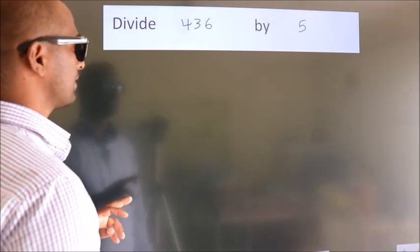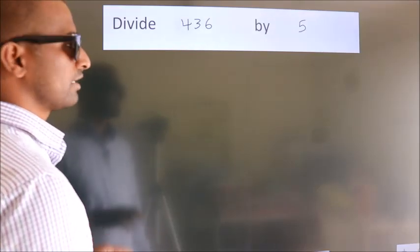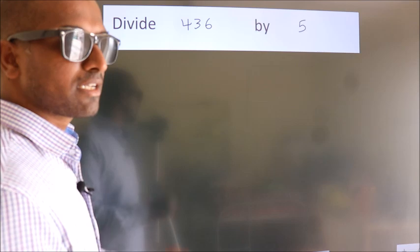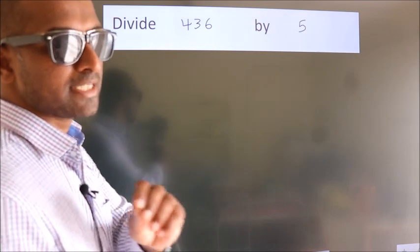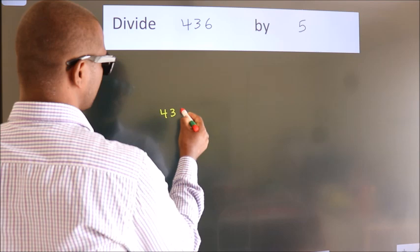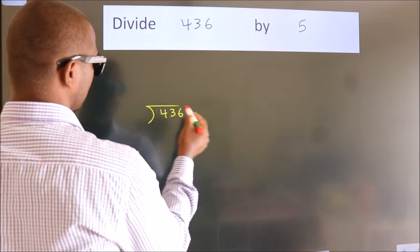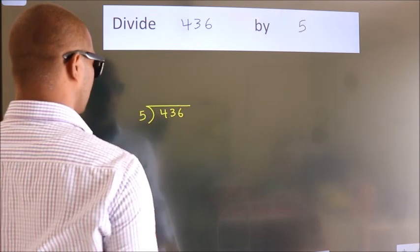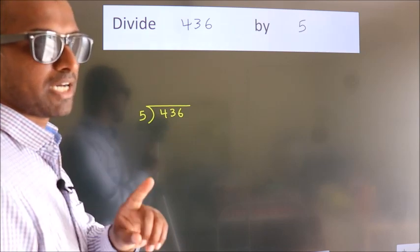Divide 436 by 5. To do this division, we should frame it in this way. 436 here. 5 here. This is your step 1.